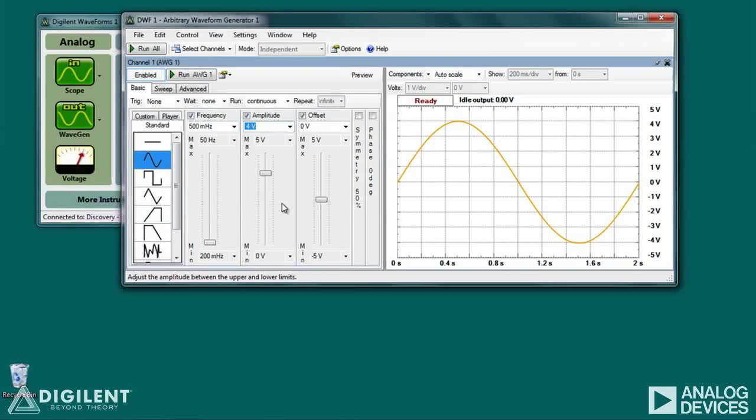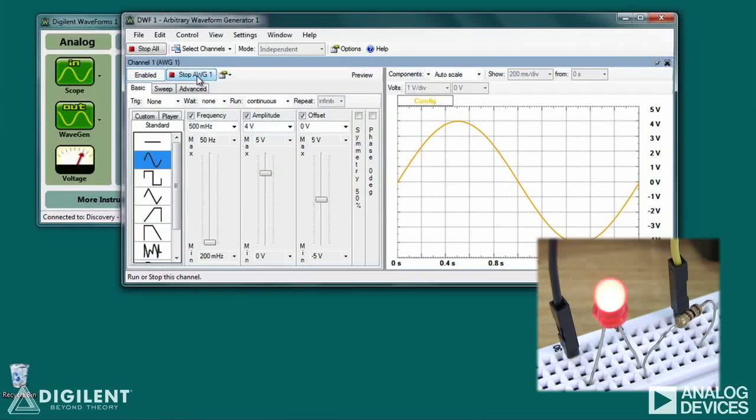To apply power to the circuit, simply click on the Run AWG1 button. We can easily change the rate at which the LED flickers by changing the frequency of the applied sine wave.